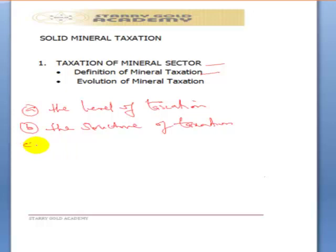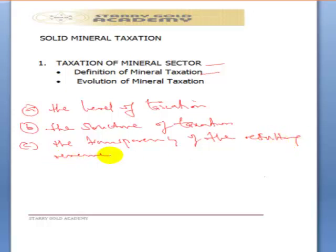The third dimension is the transparency of the resulting revenue streams. Transparency is about tax payment — so that elected representatives and common citizens can track where the revenue goes. This relates to how the revenue accrued in the form of tax is being shared among communities and citizens.